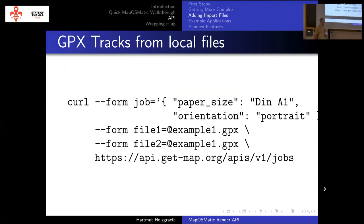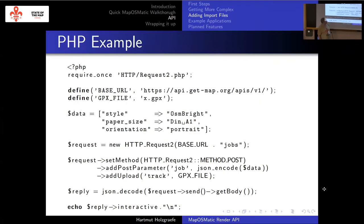It is also possible to upload files directly as part of the render request. With CURL this is pretty simple — you just add another form field. The name doesn't even matter; the only thing that matters is that the actual JSON block is called 'job'. Then you can add additional local files — in CURL that is done by adding an '@' followed by the file name. This is an example of how to do the same in PHP. It's a very simple proof of concept with no error handling, but it fits on the slide. You have the URL, you set a style, paper size and orientation, add one GPX file, submit the request, and get the interactive status information back.